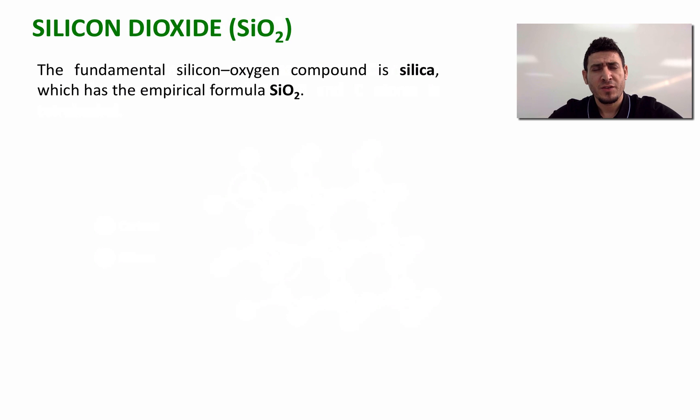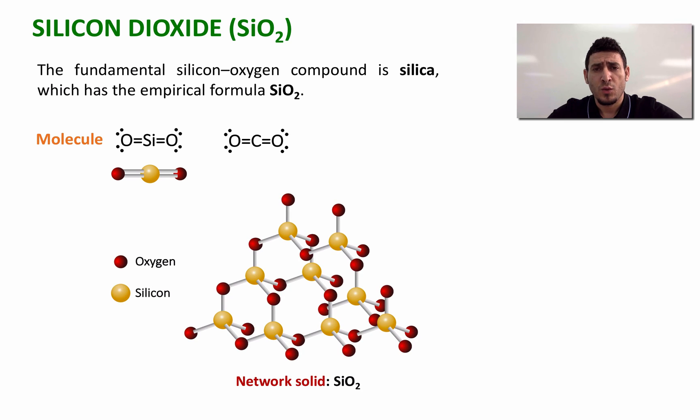Let's consider another network solid made from silicon, which is silicon dioxide. If we take a look at the molecule silicon dioxide, we might think that it should be similar to that of CO2. This is only if silicon dioxide were in a gaseous state. However, at room temperature, silicon dioxide forms a network solid where silicon has a tetrahedral geometric shape with shared oxygen atoms.